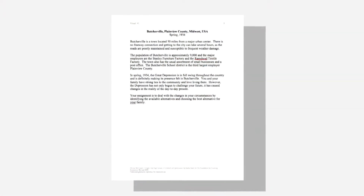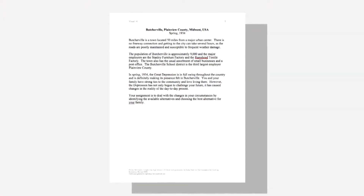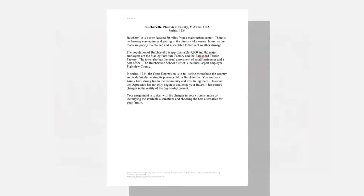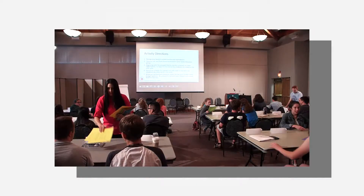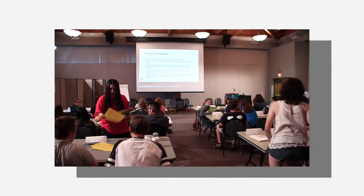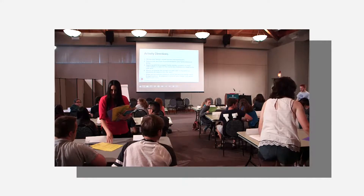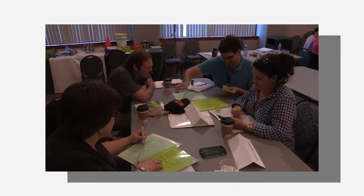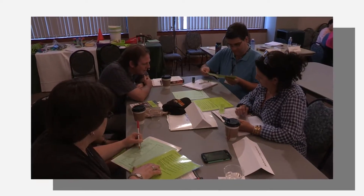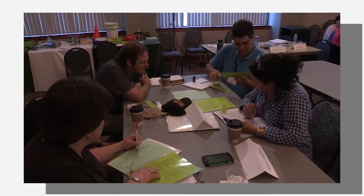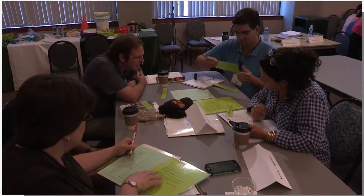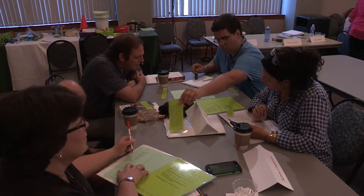Use the Butcherville USA handout to explain the scenario and set the activity up. Divide the students into families and give each family their budget and family scenario sheet. Once they have had a chance to review those, pass out the role cards and instruct students to take turns, starting with the youngest family member sharing their new information with the family.